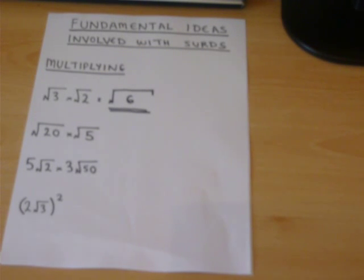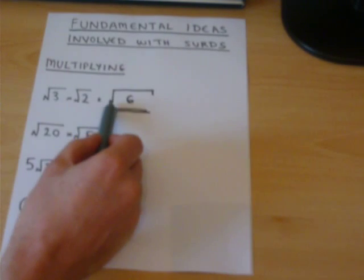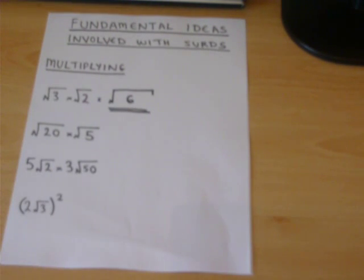The answer is still a surd. We cannot work out the square root of six without a calculator or a computer. The next example works in the same way.